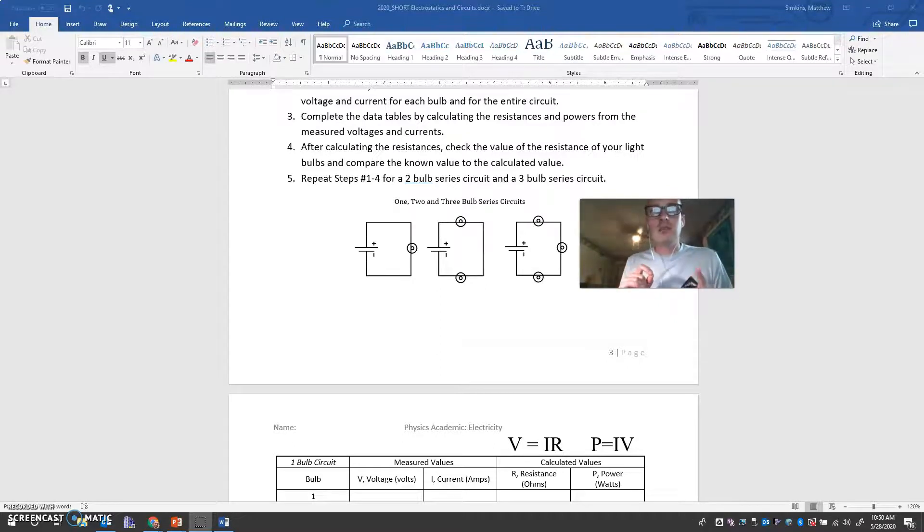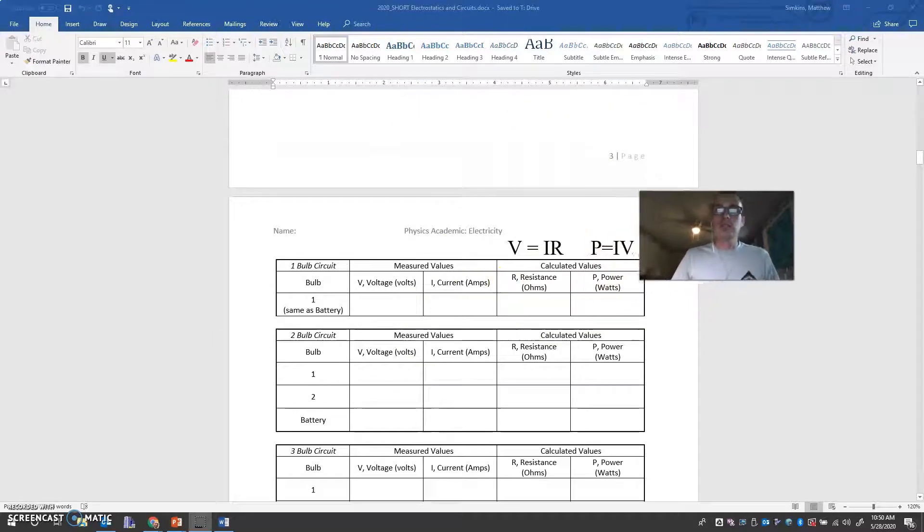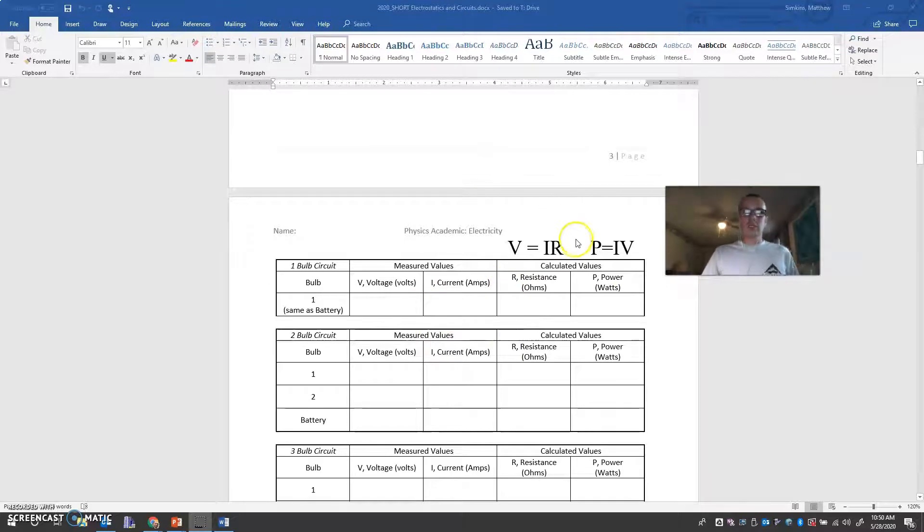Now let's talk about these symbols. These symbols, you have a battery. That's the little plus minus thing. You have the little squiggly circle guy. That's indicating a light bulb. And so if you look right here, the first circuit, we have one light bulb and one battery. The second circuit, we have one battery and two light bulbs. And the third circuit, we have one battery and three light bulbs. So I want you to build these three circuits and I want you to record the measurements that you take from those three circuits.